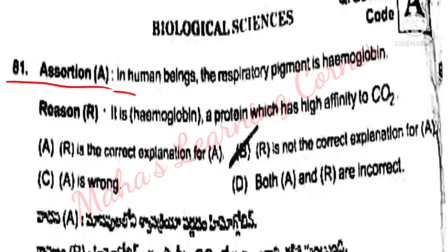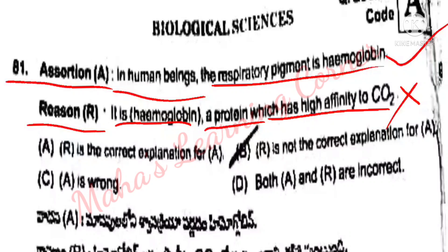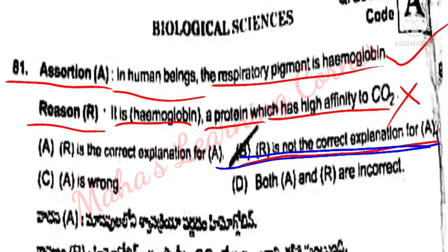Assertion A: In human beings, respiratory pigment is hemoglobin. Respiratory pigment hemoglobin is correct. Reason R: It is hemoglobin, a protein which has high affinity to CO2. Option B: R is not the correct explanation for A is the correct answer.